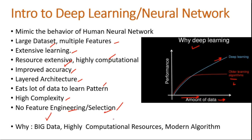We use deep learning now because the amount of data is increasing day by day. Earlier we didn't have highly computational resources, but now we have GPUs with thousands of cores. Earlier we only had CPUs, which have fewer cores compared to GPUs. Today researchers are developing new algorithms every day, and one more important thing: in deep learning we don't need to do data pre-processing.